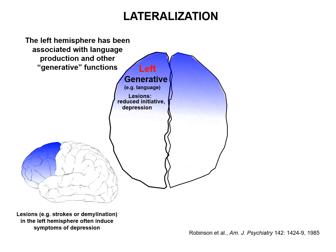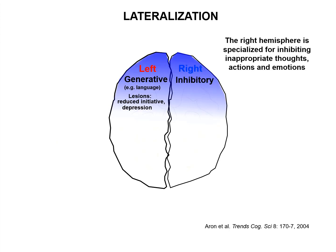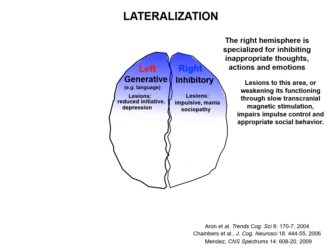Interestingly, lesions to the left hemisphere are often associated with depression, suggesting that this hemisphere plays a cheerleader role under normal conditions. In contrast, the right hemisphere is specialized for inhibiting inappropriate thoughts, actions, and emotions. Lesions to the right hemisphere, or experimental manipulation which weakens its function, impair impulse control and can induce inappropriate social behaviors. We will come back to the importance of prefrontal lateralization when we discuss bipolar disorder later in this lecture.